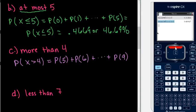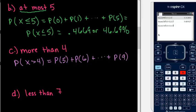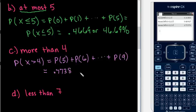Since we just used binomCDF, we can do the same thing but only change our lower and upper limits. We want to start with 5 and end with 9, so we change our lower limit to 5 and upper limit to 9, then hit enter. The probability that more than 4 people responded that they feel health care costs should be reduced is 0.7738, or 77.38%.